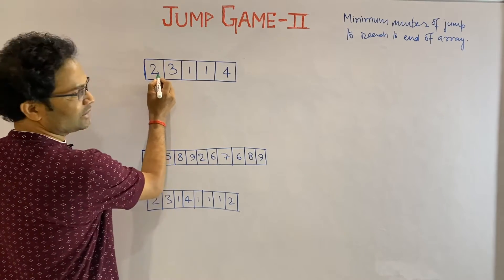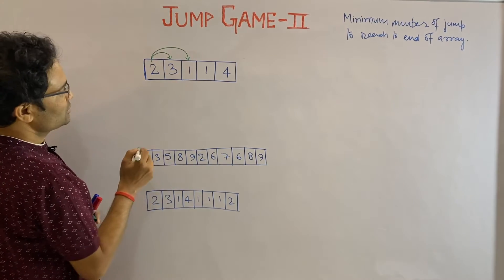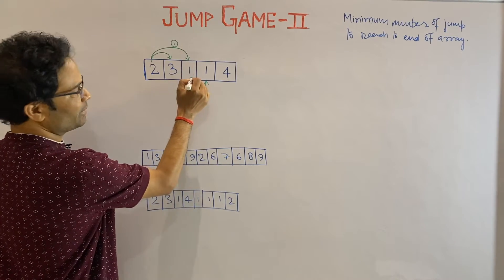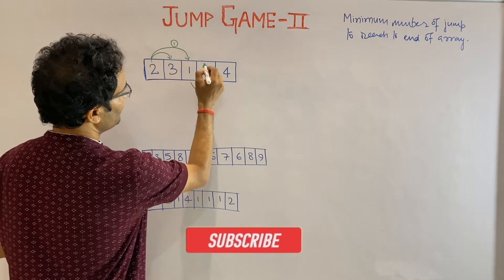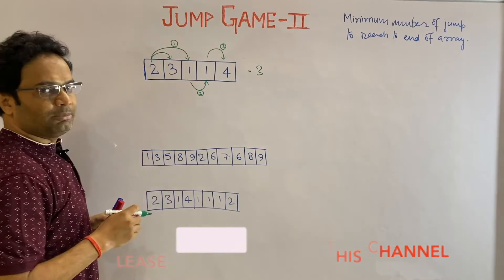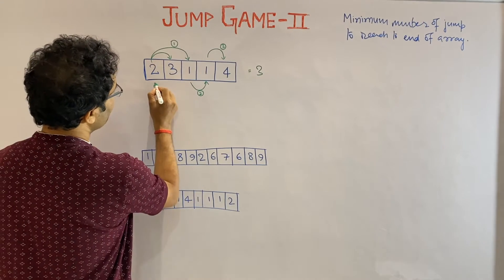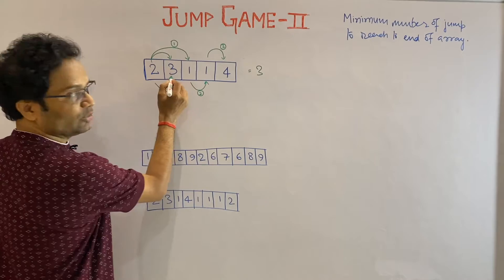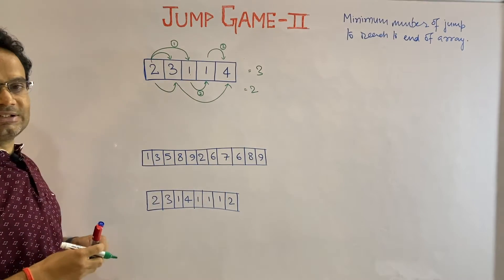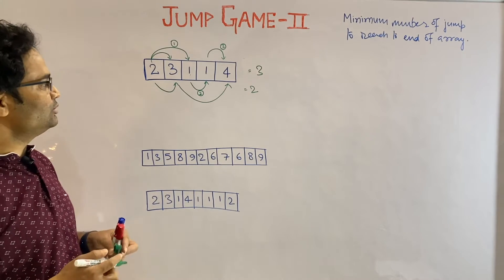If you see here, this value is 2, so we can go from here to either index 1 or index 2. Suppose you reach index 1 - that is one step - and the element there is 1, so the maximum you can go is one more step, and from there you can reach the target. That is three steps total. But if you change your strategy, you might reach in fewer steps. If you take one step to index 1 and then from there take three steps, you can directly reach the destination in only two steps.